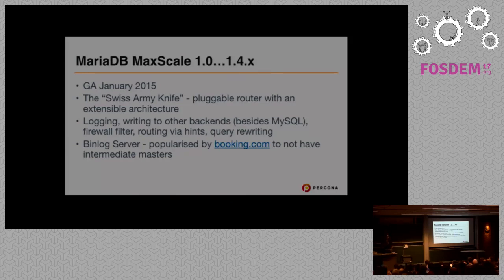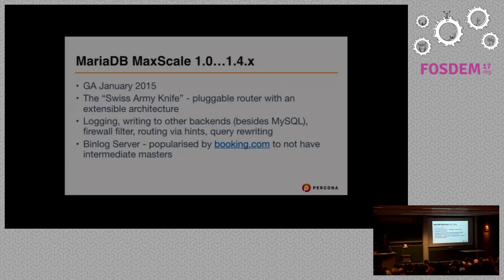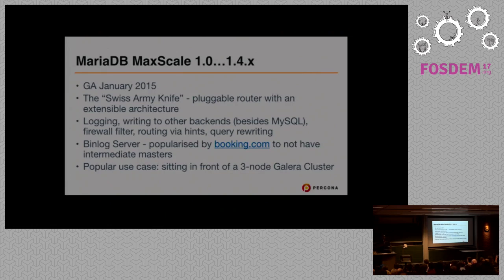It also provided schema-based sharding. One of the most popular use cases for MaxScale was the binary log server, popularized by Booking.com. The idea was to not use intermediate masters — you would have masters served by MaxScale and then get all the slaves to read off MaxScale. And one of the most popular use cases was to put it in front of a three-node Galera cluster, three nodes being the minimum to start a Galera cluster.